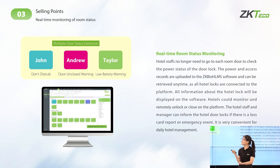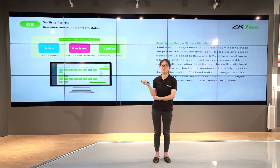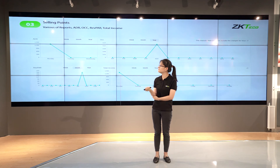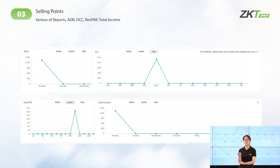Next is the real-time monitoring of room status. You can easily notice abnormal room status through our platform and take timely actions — for example, if battery is low, you will ask your employee to replace it in time. Also very important is the reporting feature, which shows hotel performance metrics such as ADR, ACC, occupancy rate, and total income of the hotel.